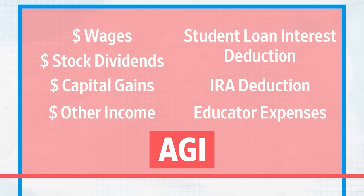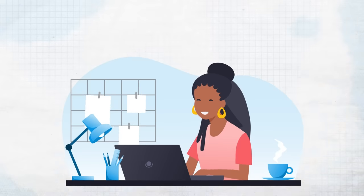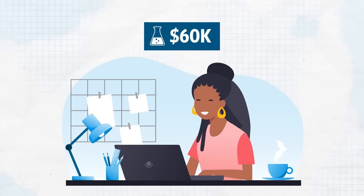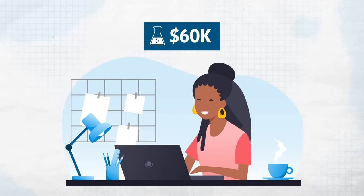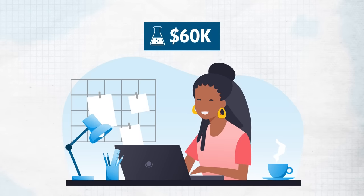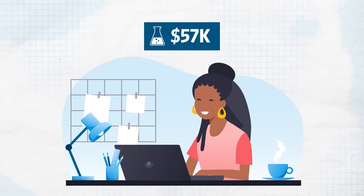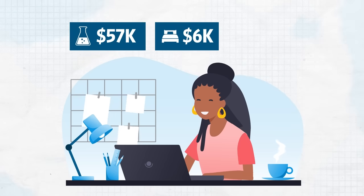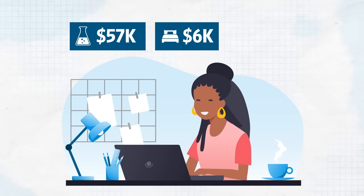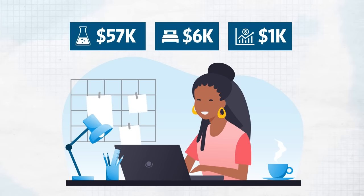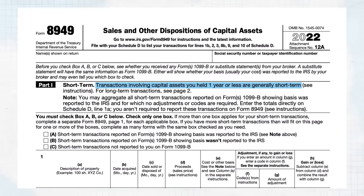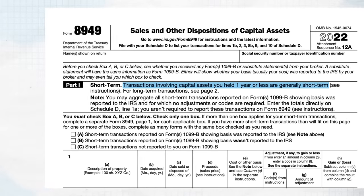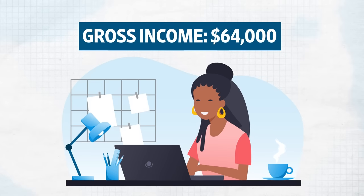Let's take a look at Olivia and calculate her gross income. Olivia earned $60,000 a year from her day job as a chemist. After subtracting her 401(k) contributions and health insurance premiums, which aren't taxed, her taxable wage is $57,000 a year. She also rented out her extra bedroom, which brought in a net total of $6,000. Olivia also bought and sold stocks within the past year, profiting $1,000. Because she held the stocks for only a few months, her profit is considered a short-term capital gain and is taxed at the ordinary income rate. So all together, Olivia's gross income comes out to $64,000.